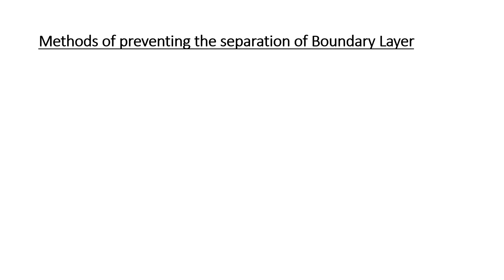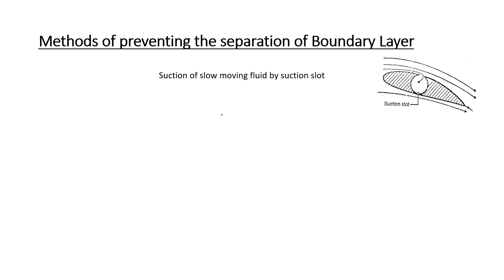Now let us look at what are the various methods of preventing the separation of the boundary layer. The first method is removing the slow moving fluid by suction.